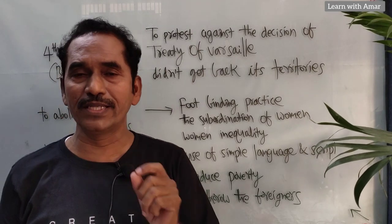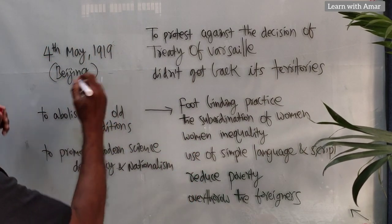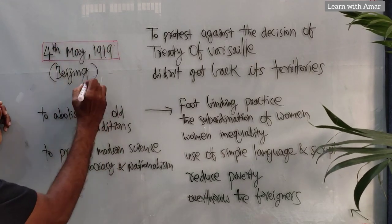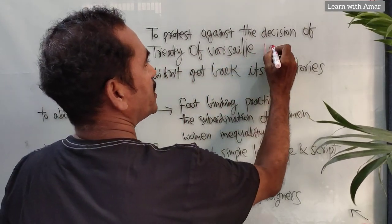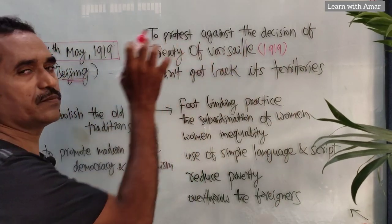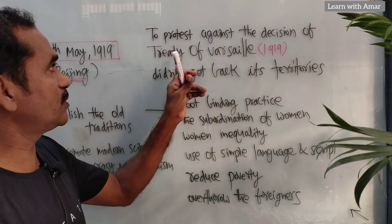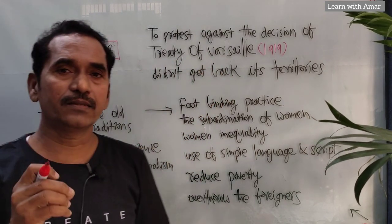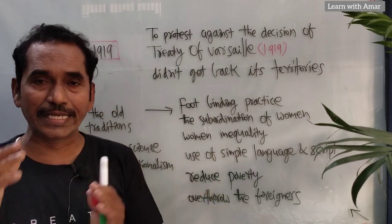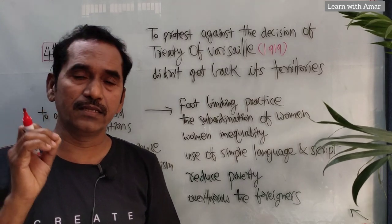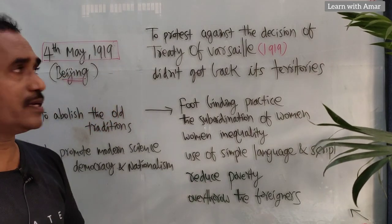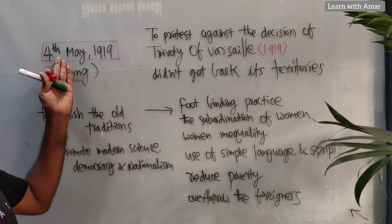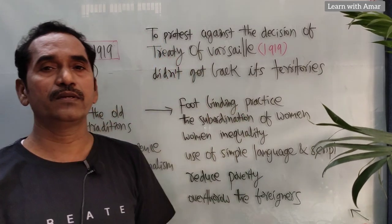During that time, a demonstration took place — people demonstrated in Beijing on 4th May 1919 to protest against the decision of the Treaty of Versailles. As we know, the Treaty of Versailles was held in the year 1919, and victorious powers made decisions about defeated powers. Though China fought in Britain's group — China was an ally of Britain — it did not get any benefit, and did not get its territory back from Japan. This made the people angry, so they demonstrated in Beijing on 4th May 1919.